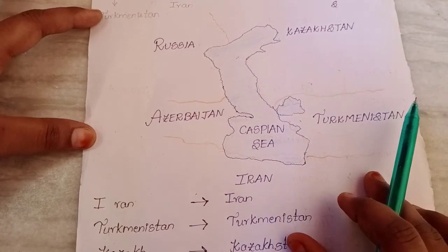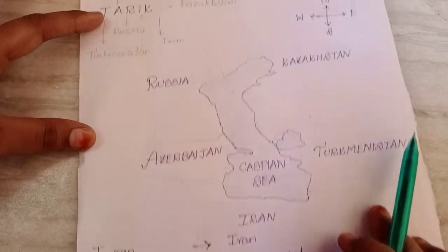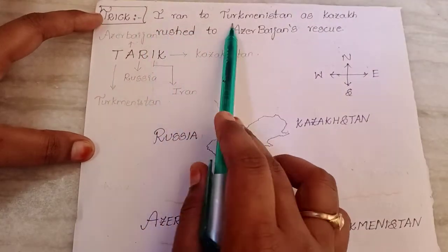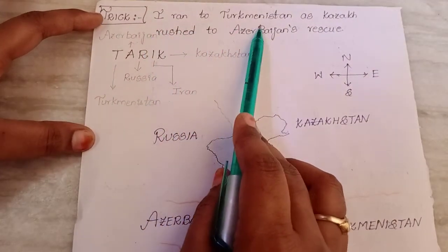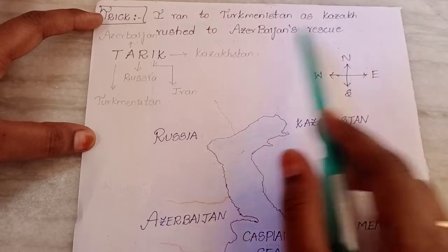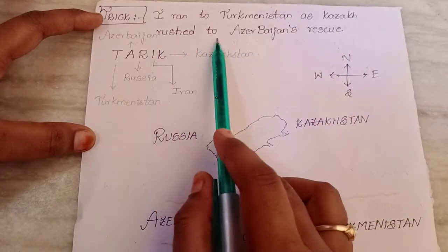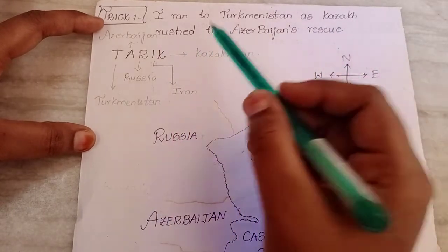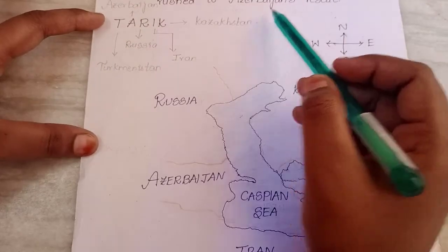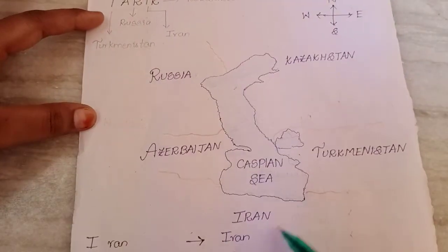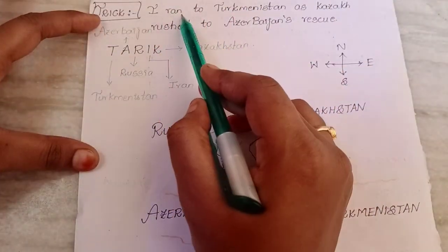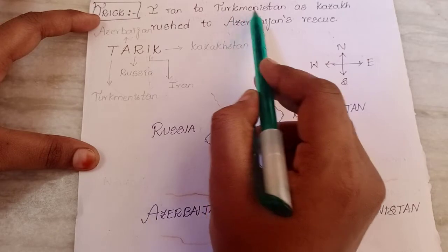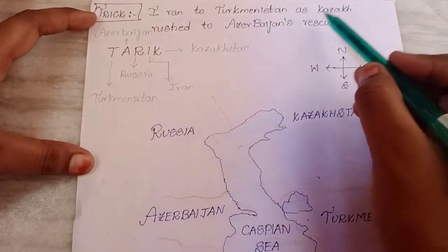The trick to remember the Caspian Sea countries is: 'I ran to Turkmenistan as Kazakh rushed to Azerbaijan's rescue.' Here, 'Iran' is used as 'I ran', and 'Turkmenistan' is used as a place.